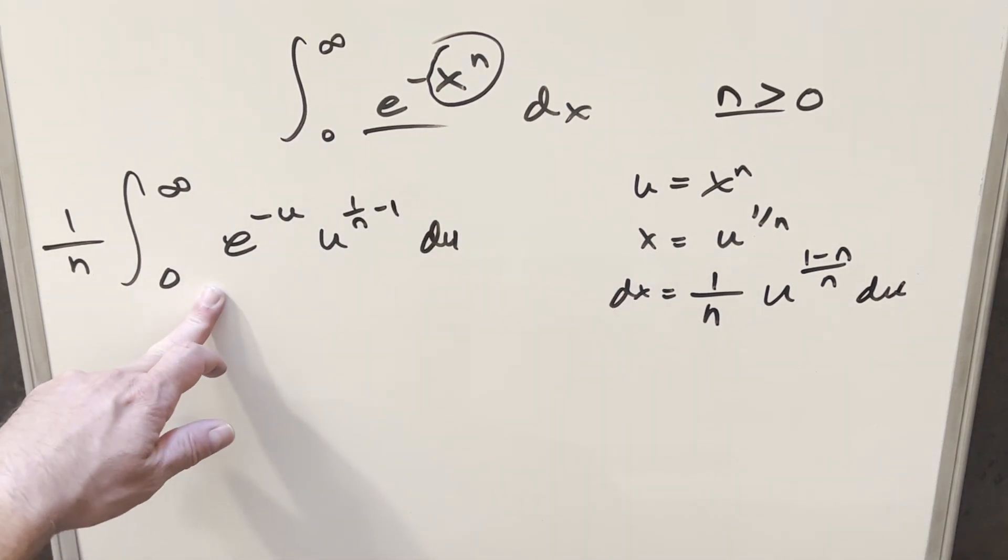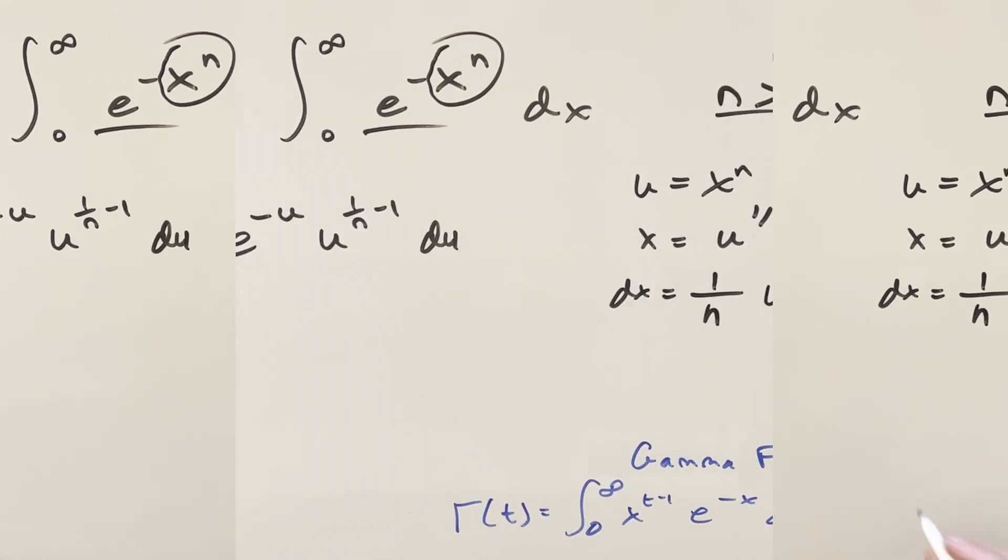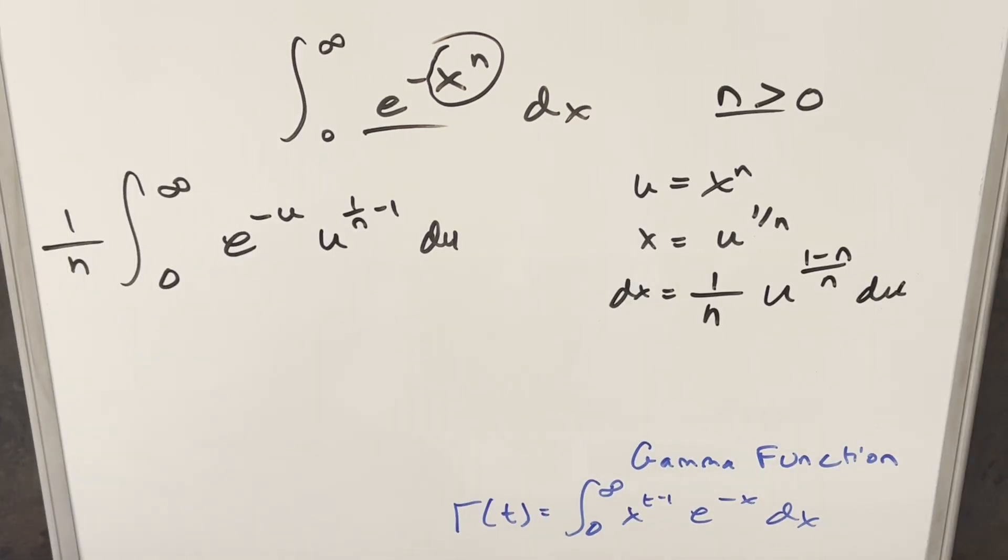At this point, this is perfectly set up to use the gamma function. Looking at the formula down here on the right, the thing to notice is that we're integrating with respect to x, but the gamma function is a function in terms of t, and our t is right there.